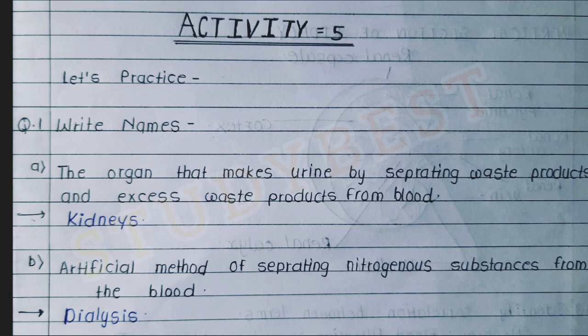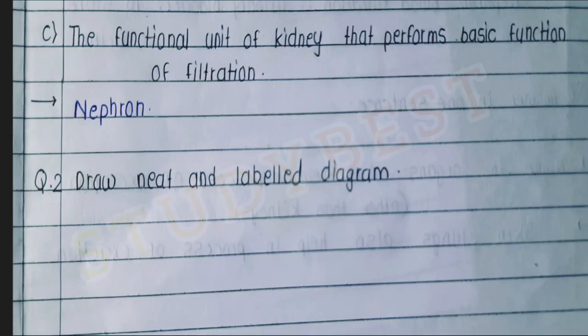Activity five, let's practice. Question one — write names: A) the organ that makes urine by separating waste products from the blood — answer: kidneys. B) the artificial method of separating nitrogenous substances from blood — answer: dialysis. C) the functional unit of the kidney that performs basic filtration — answer: the nephron. Question two: draw a neat and labelled diagram.